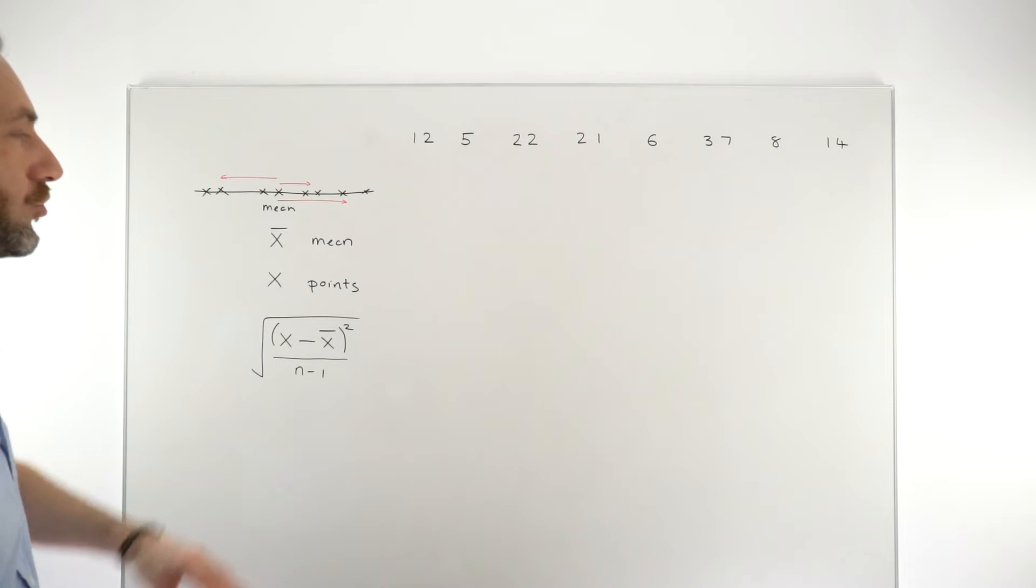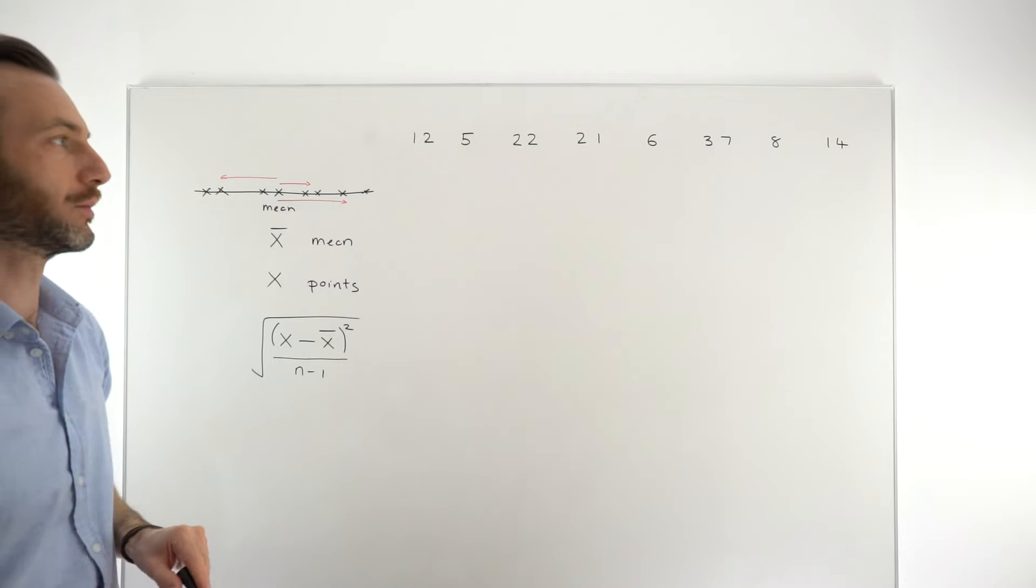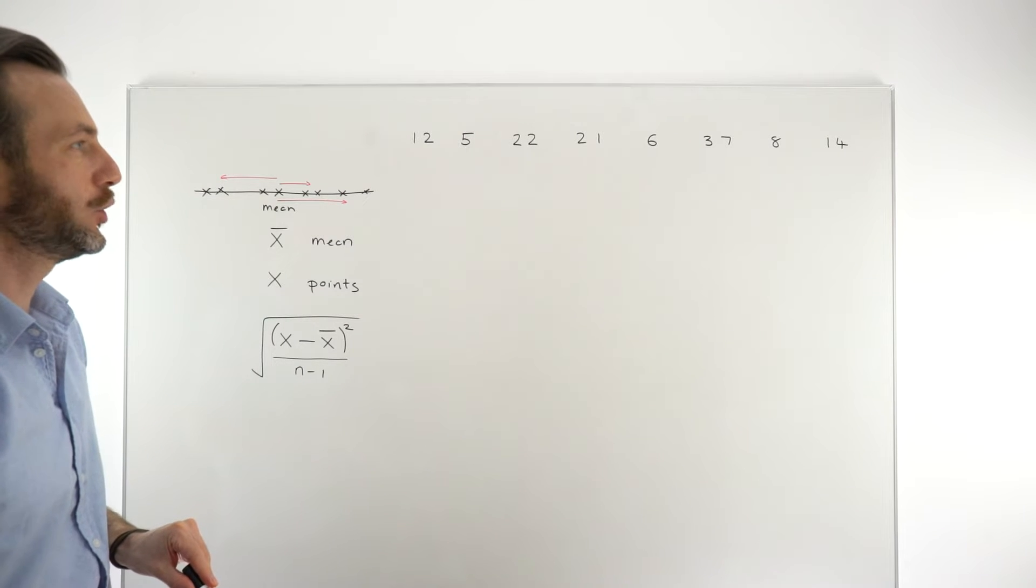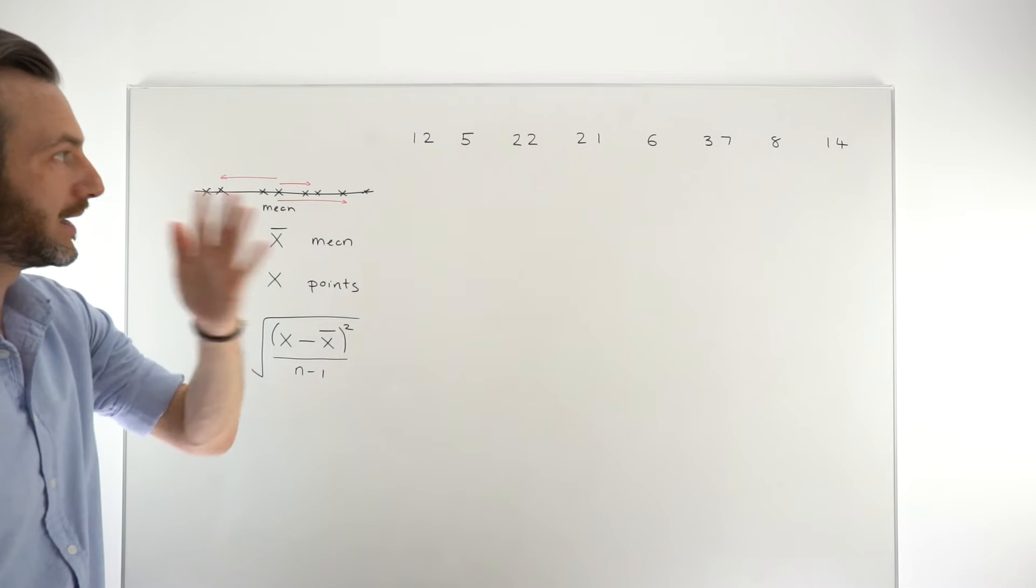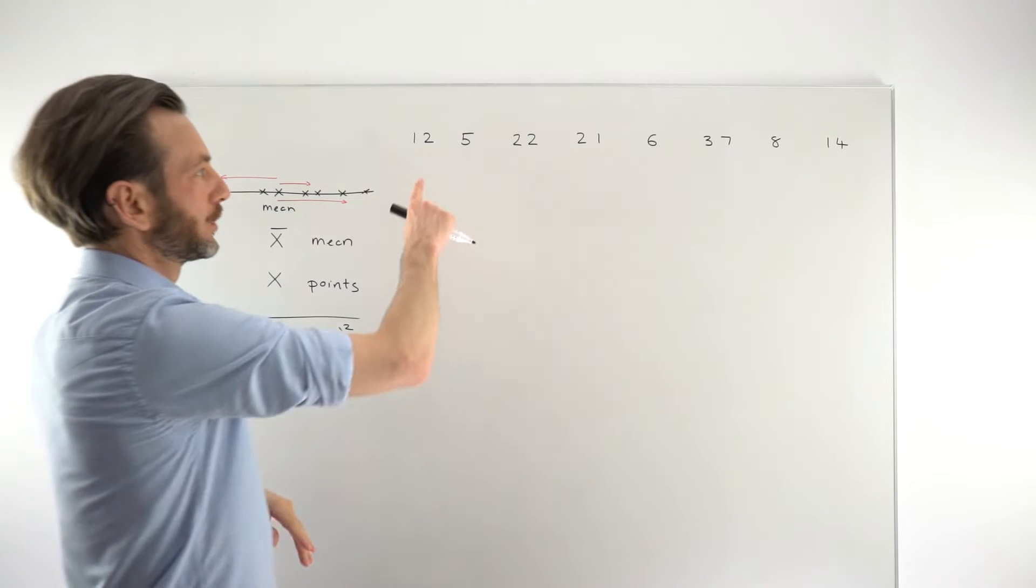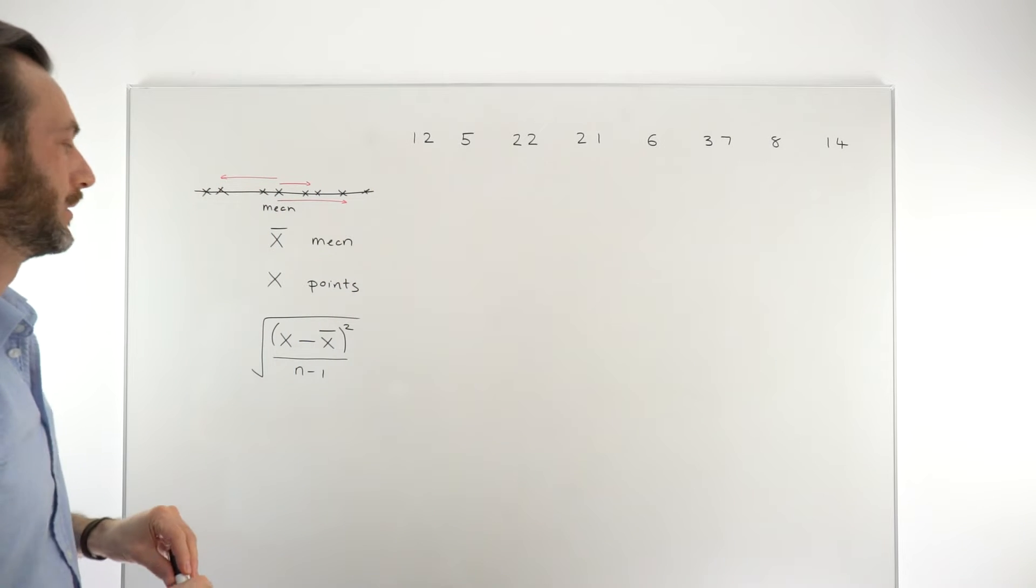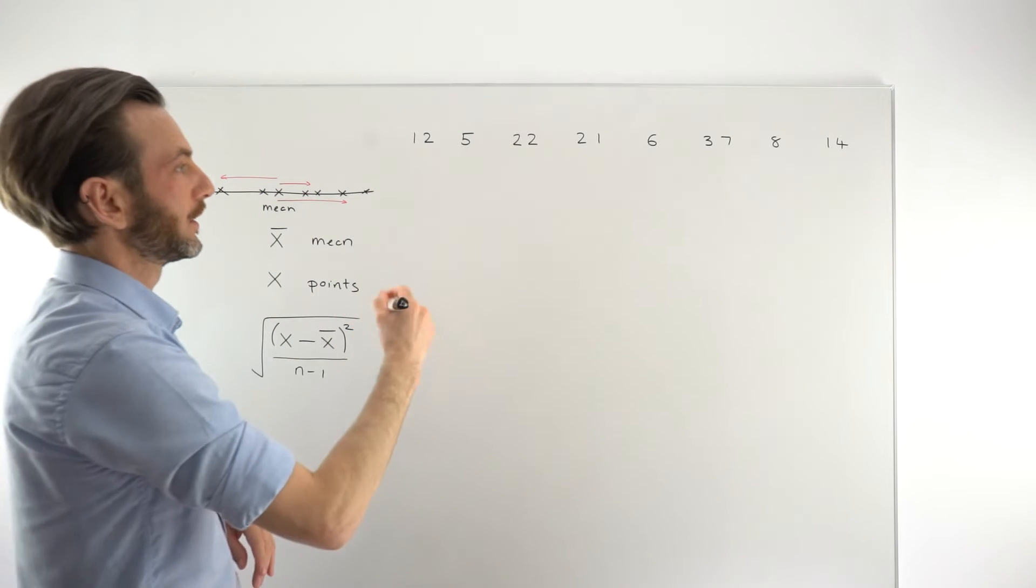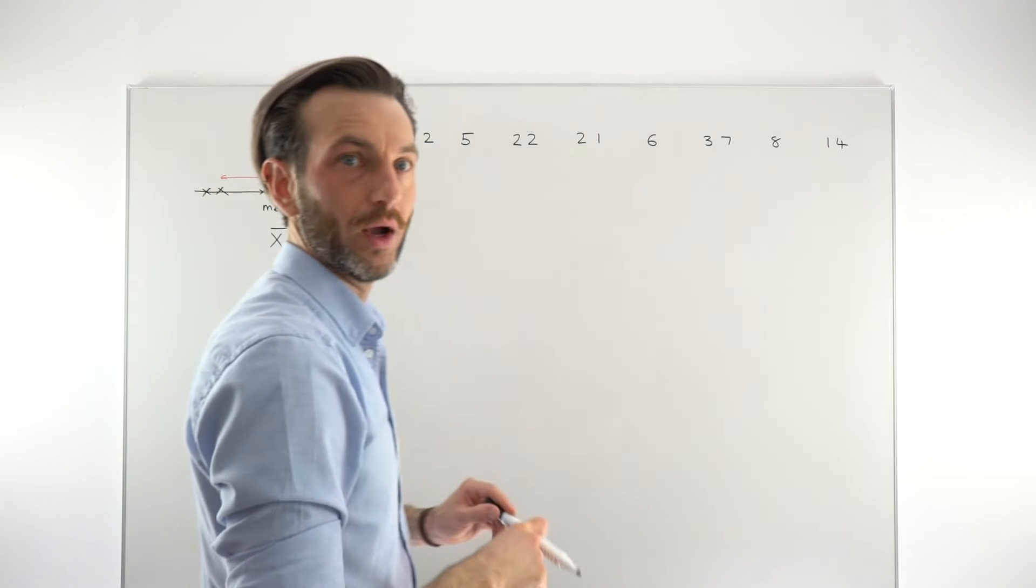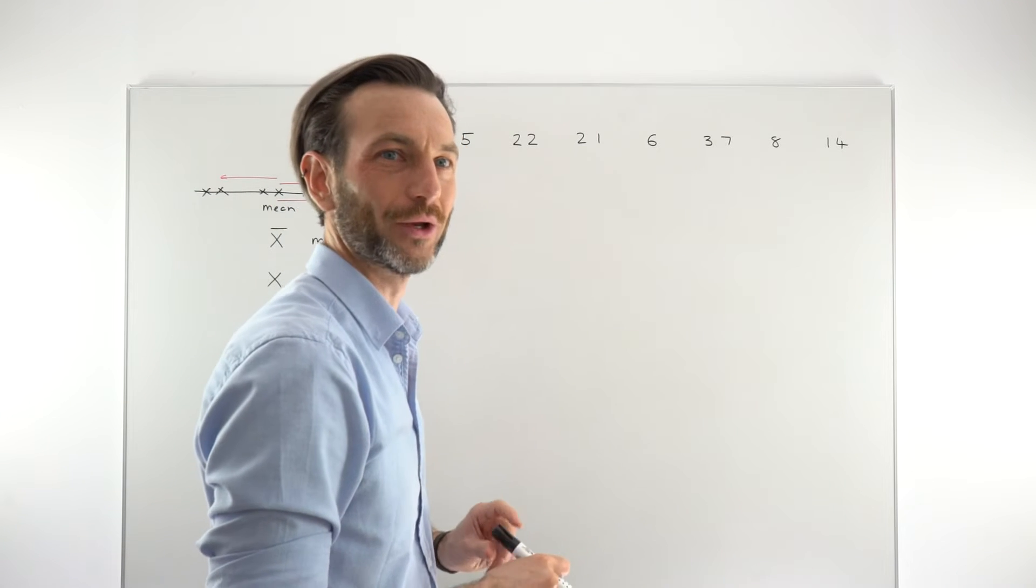The challenge, like I said, is keeping track of the information as we kind of work through the formula. So usually the best way to do this is to create a table. You would start by making your mean number. Your mean number you'll get by adding these all together and then dividing by how many numbers you've got, which would be eight in this case. And then once you've done that, you start to build up a table. So I've got a cheat sheet for this one, which I'll just refer to as we go along.